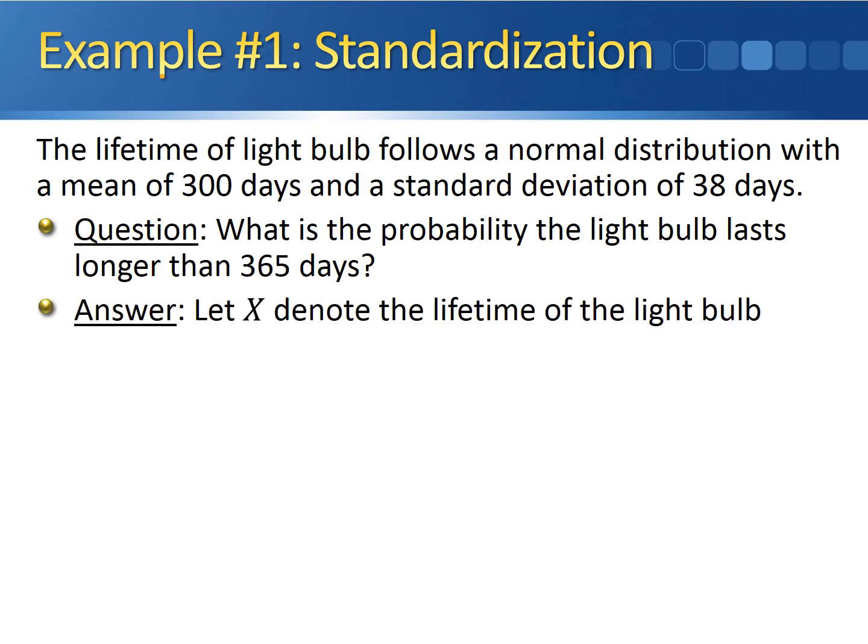Let x denote the lifetime of the light bulb — a normal random variable that represents the length of a light bulb's life before it burns out. What we're after is the probability that x is greater than 365 days. Since x is just a normal random variable and not standard normal, we have to standardize this number.